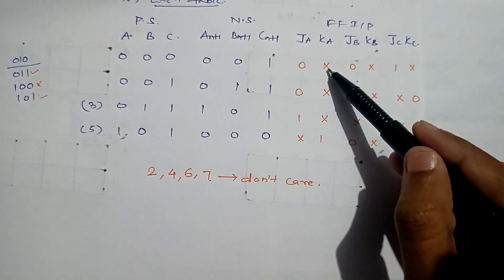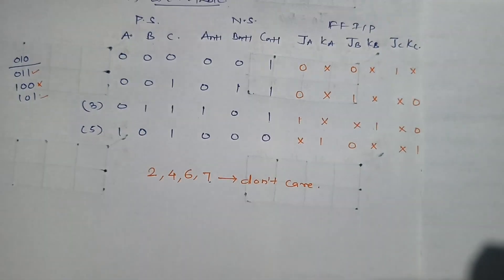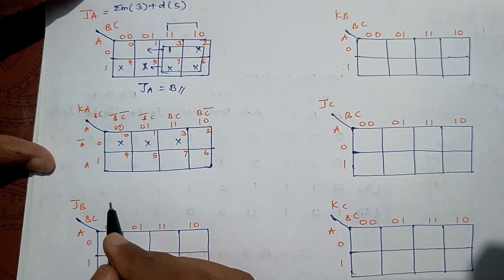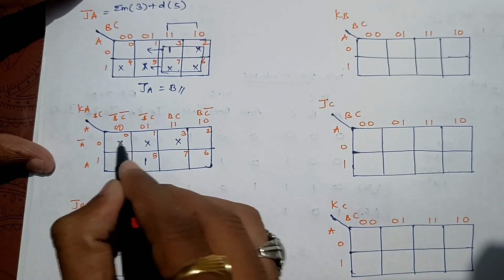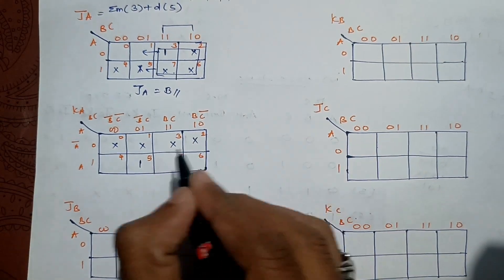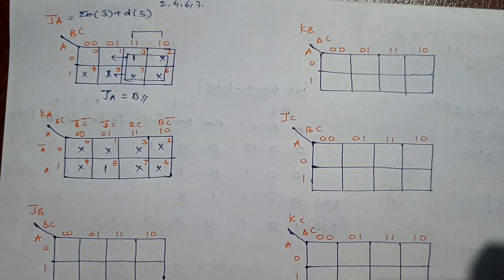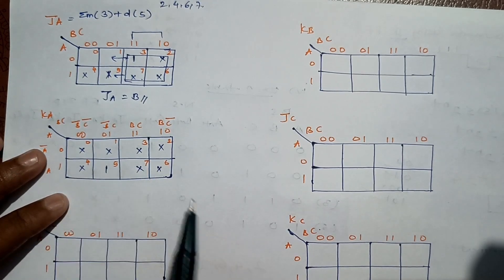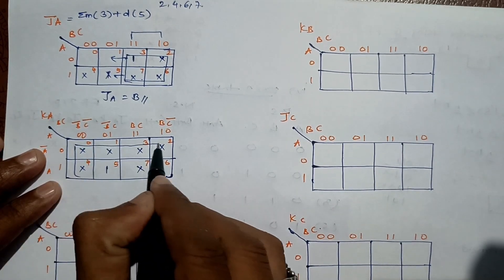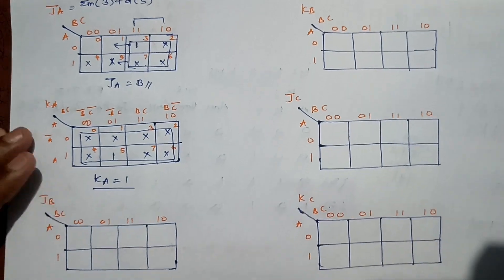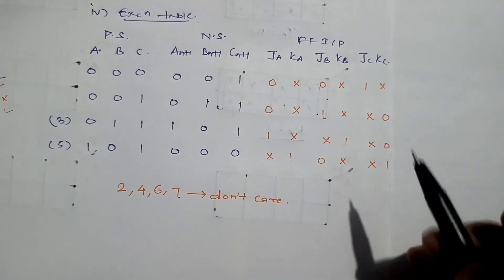For KA: states 0, 1, and 3 are don't care, state 5 gives 1, and states 2, 4, 6, 7 are don't care. Since every cell is either 1 or don't care, we can form an octet, giving KA = 1.